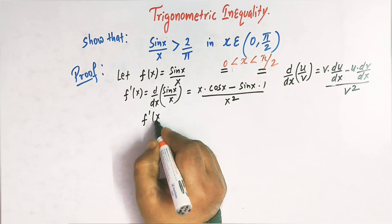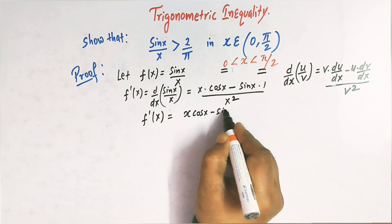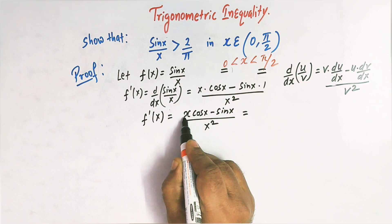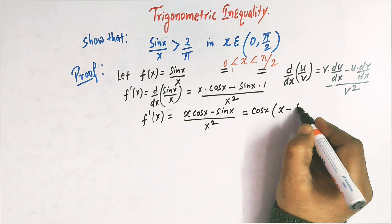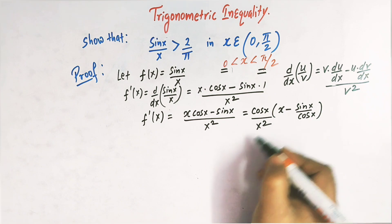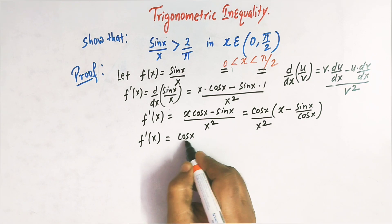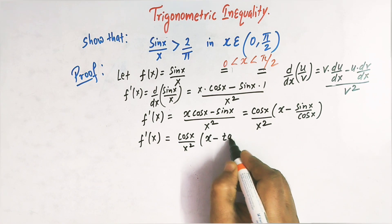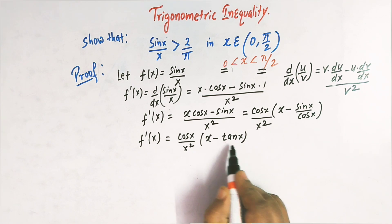So we have the derivative f prime of x is equal to x cos x minus sin x, divided by x square. Now let us take cos x common in the numerator. We have cos x times x minus sin x over cos x, divided by x square. So we can write f prime of x as cos x divided by x square, times x minus tan of x, since sin x over cos x is equal to tan of x.